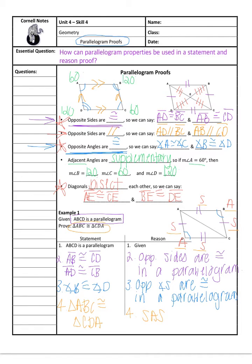There was another way we could have solved this proof. After stating opposite sides are congruent, if you forgot that opposite angles are congruent, notice these two triangles also share side AC. So you could have said AC is congruent to AC because of the reflexive property, and then your last statement would have been side-side-side. There's nothing wrong with doing that — you wouldn't lose any credit because that is another correct way to solve this problem.